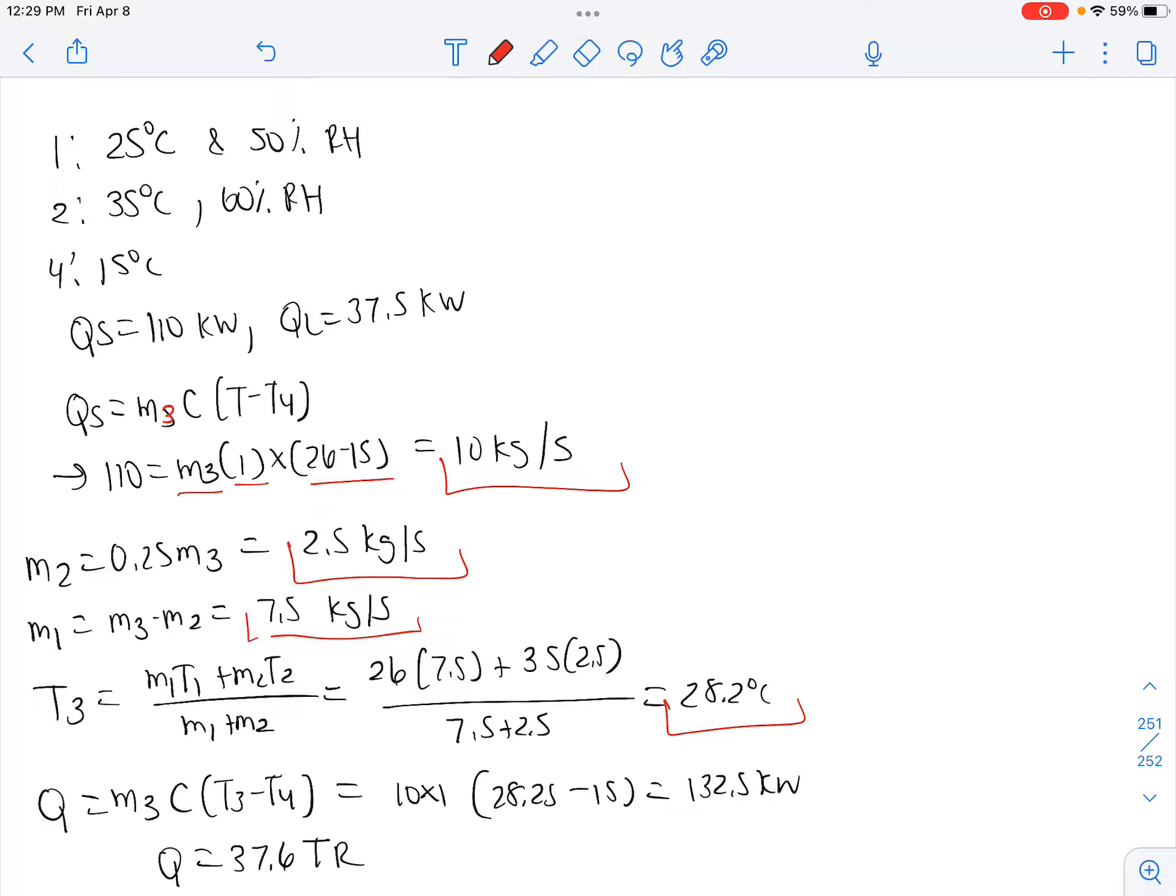So our refrigeration capacity Q is M3 times C times T3 minus T4, or 10 times 1 times 28.25 minus 15, which is 132.5 kilowatts. But one kilowatt is 0.2843 TR, so our Q is 37.6 TR.